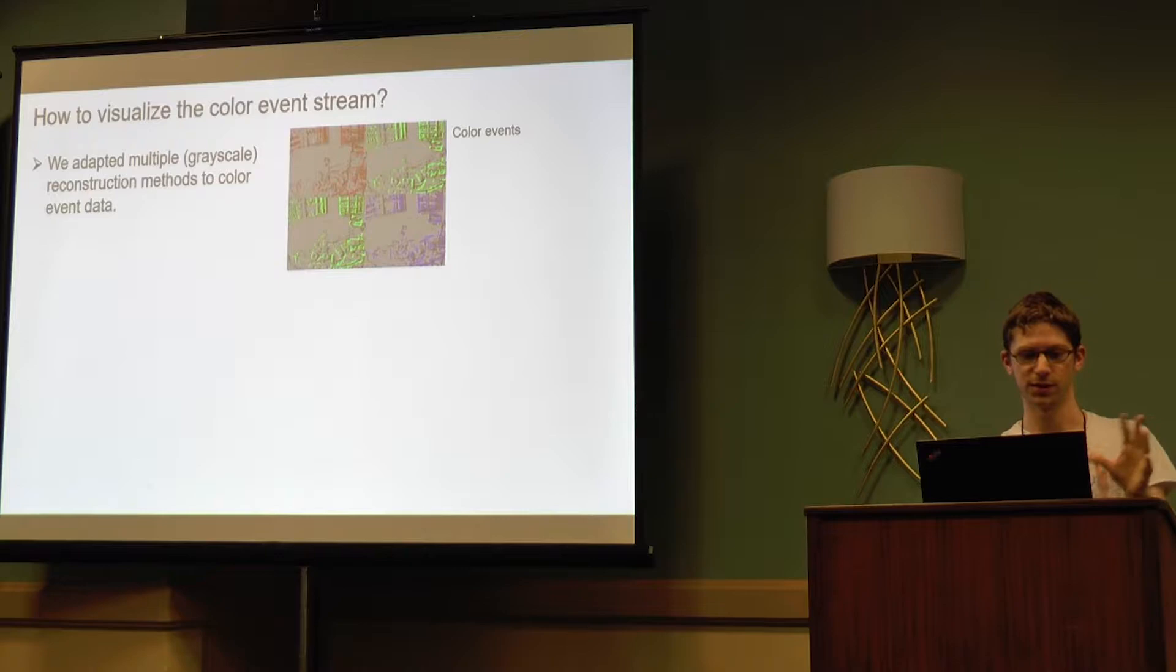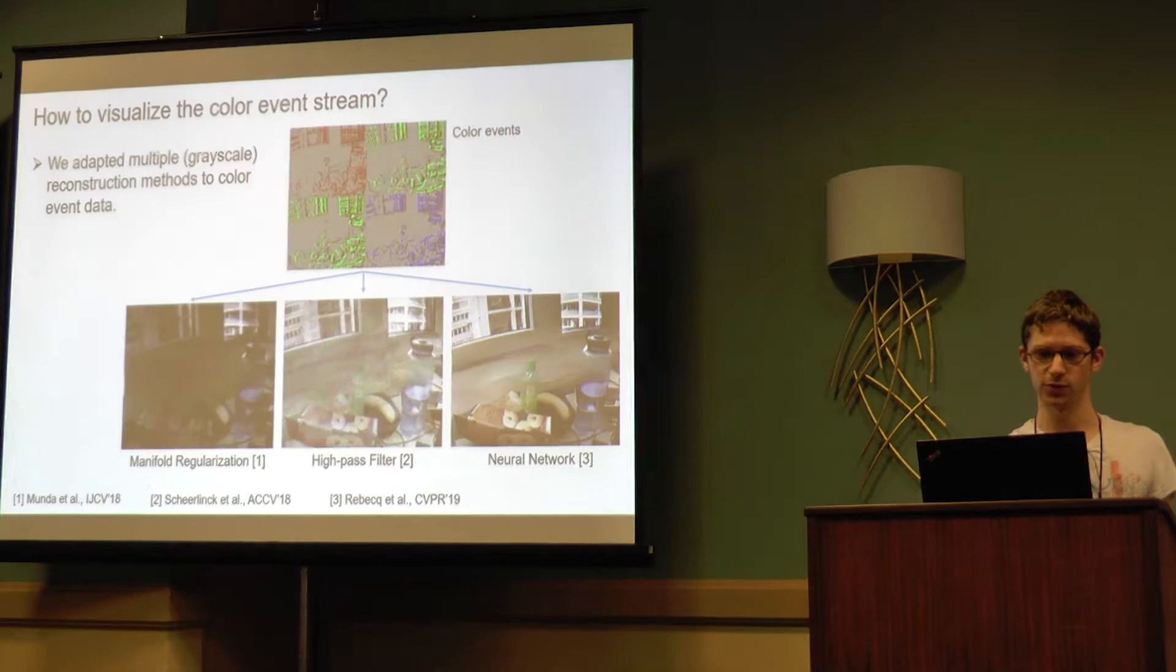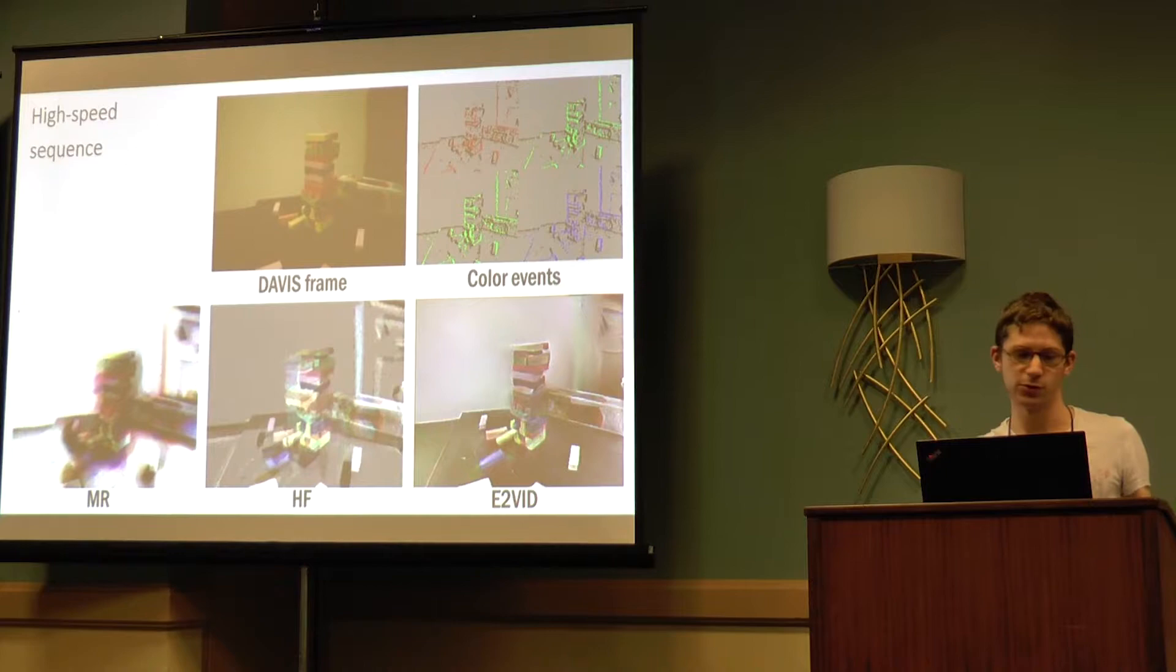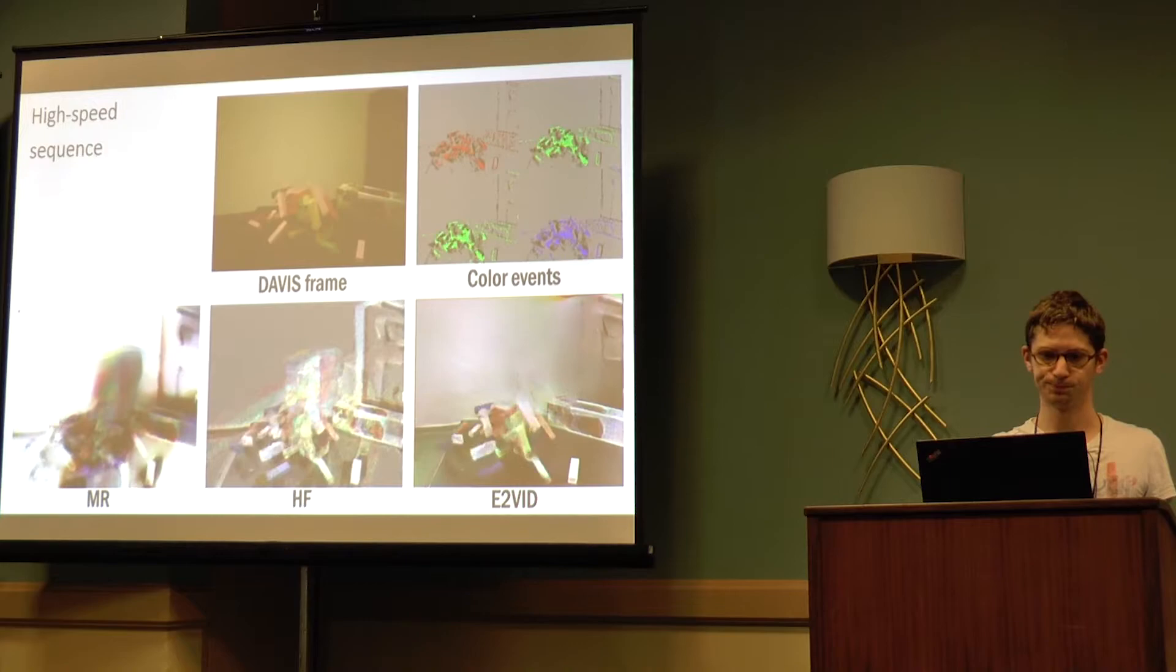As an input we have color events, and as an output we adapted several methods to reconstruct images. Now I'm showing examples of such reconstructions. This is a high speed sequence in which on the top right you can see color events, and you can see three different reconstruction methods at the bottom, including in slow motion.